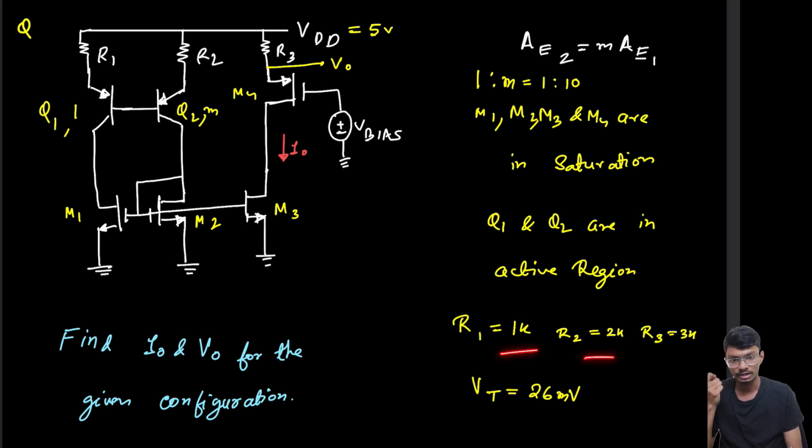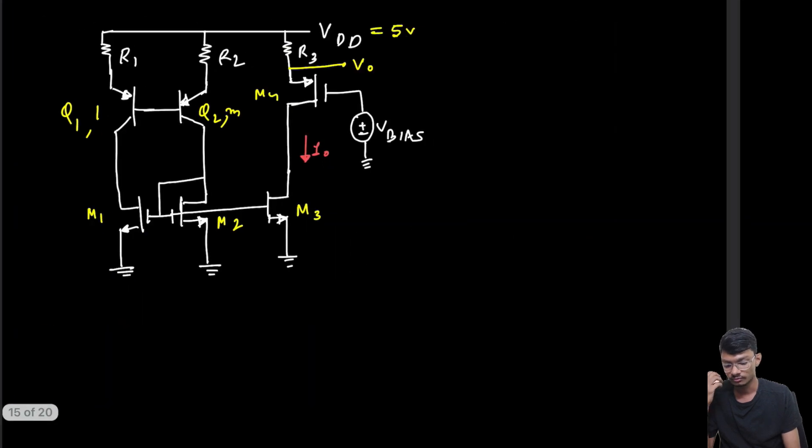It's also given that R1, R2, and R3 are 1 kilohm, 2 kilohms, and 3 kilohms respectively, and thermal voltage is 26 millivolts. This question is asking us to find the current I0 through this MOSFET M3 and V0 for the given configuration.